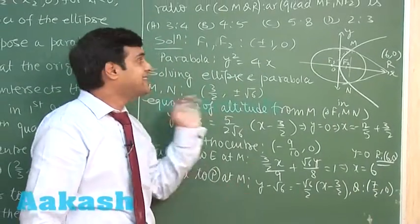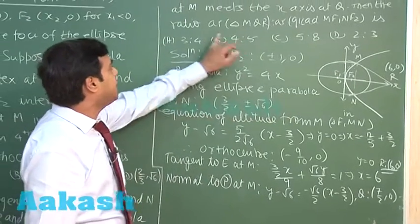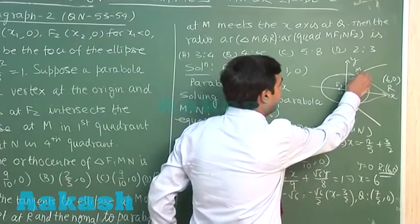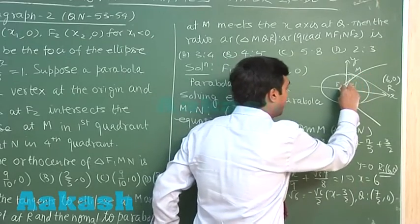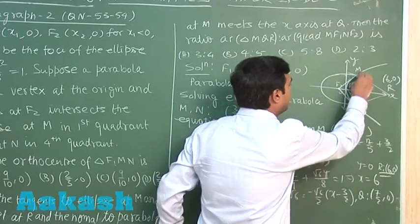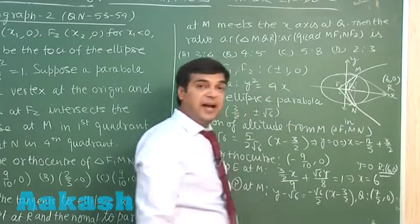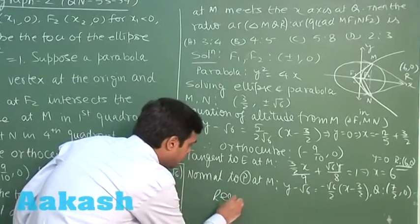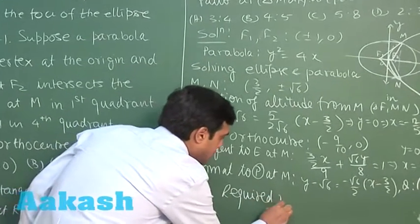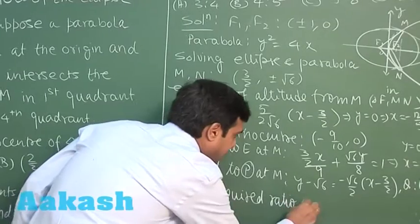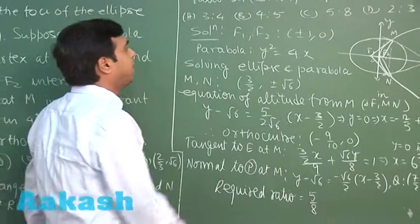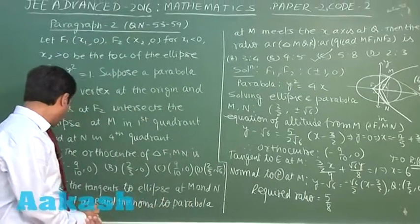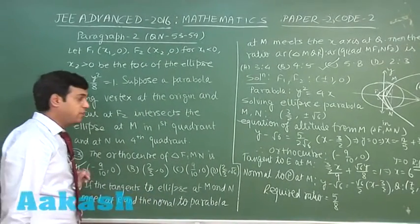Now we have obtained all the points. Simply we have to find the area of the triangle MQR, then the area of the quadrilateral AF1NF2, meaning just find the area of one of the two triangles and double it. So in order to get the required ratio, it is 5 is to 8, or simply 5 by 8. So option C is correct for question number 54, while A is correct for 53.